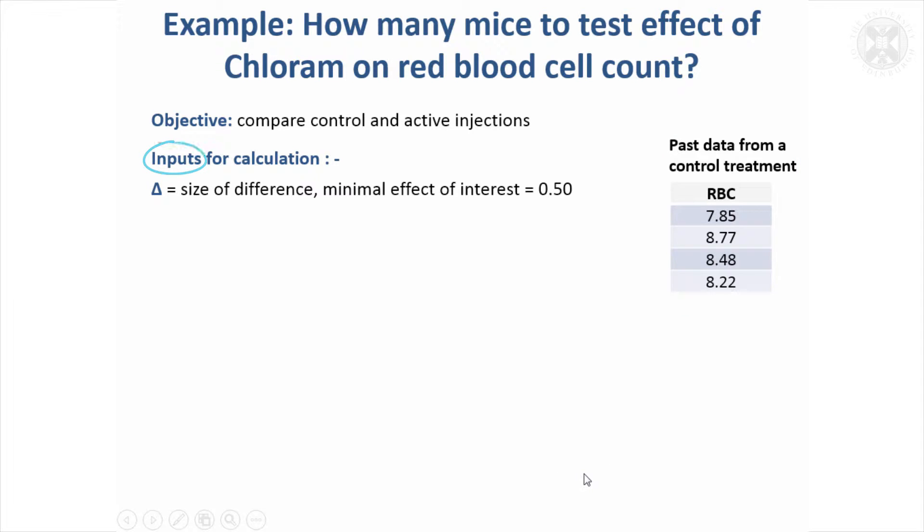Our inputs are, first of all, we need to say what's the size of the difference we want to be able to detect. Here we'll say that if there was a 0.5 difference in red blood cell count, we would be interested in it between the groups. So that's our size of the difference we want to detect.